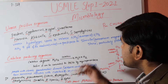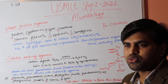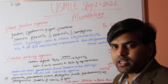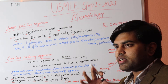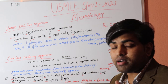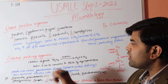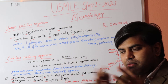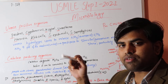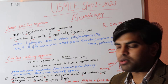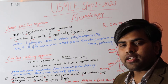Now turning to catalase-producing organisms: most organisms covered in microbiology are catalase-positive. Among gram-positive organisms, the key distinction is that Staphylococcus is catalase-positive while Streptococcus is catalase-negative. All gram-negative enteric bacteria are catalase-positive.